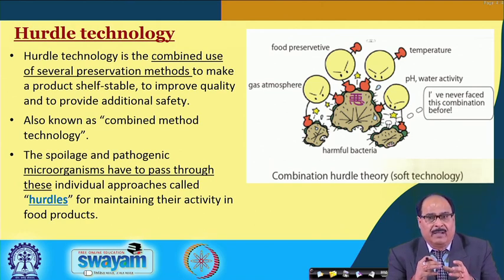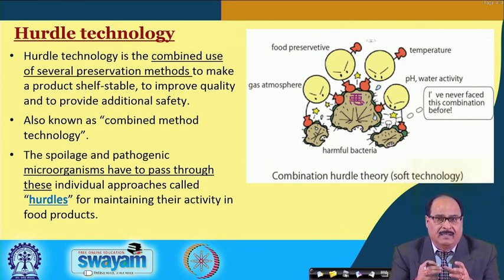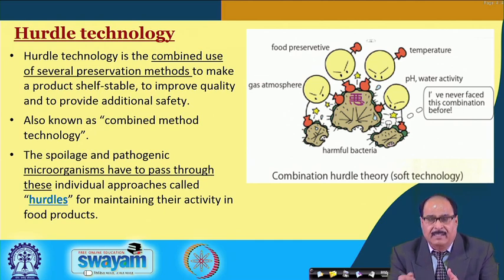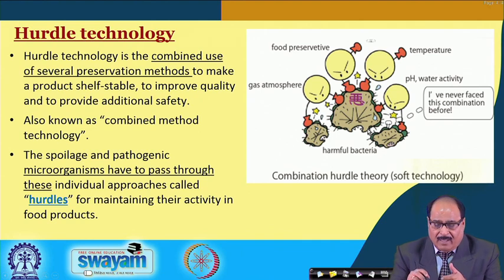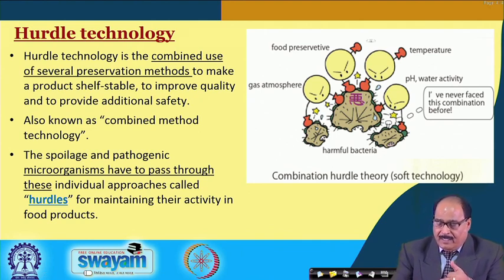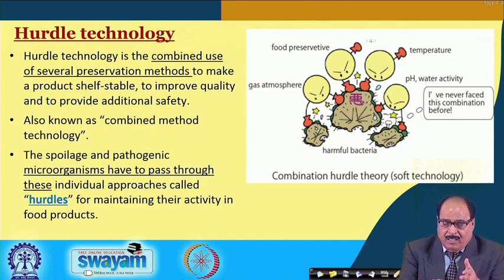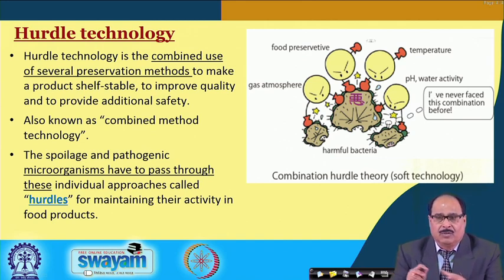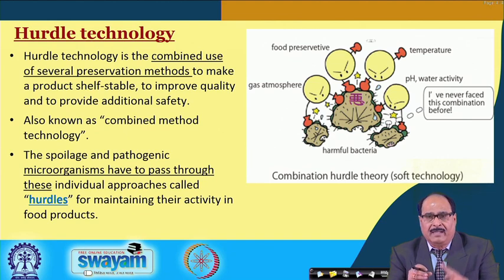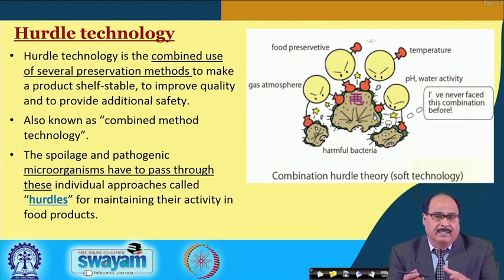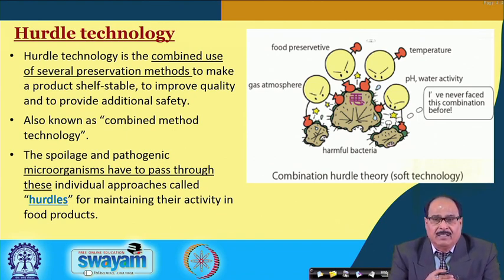This is the major concept in hurdle technology. As you can see in this picture, bacterial cells are shown and different factors like temperature, pH, water activity, gaseous atmosphere, and food preservatives are illustrated. If these factors are applied individually, then in order to get the desired sterility, severe conditions of these individual factors might be required.